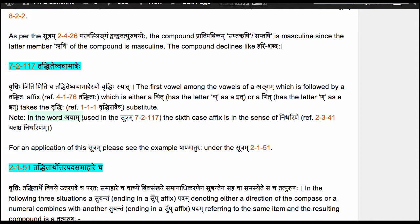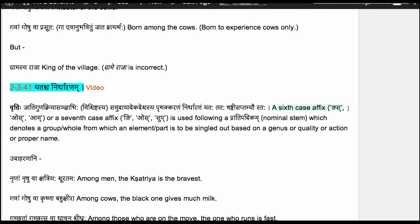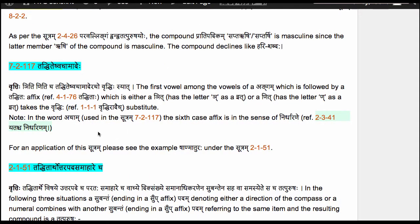The note here says that in the word Achaam used in Sutram 7-2-117, the 6th case affix is in the sense of Nirdharane. Recall Sutram 2-3-41 Yatashca Nirdharanam, which tells us that the 6th case affix or 7th case affix is used following a Pratipadikam which denotes a group or whole from which an element or part is to be singled out based on a genus, quality, action, or proper name. Here we are singling out one vowel from the set of vowels in the Angam — that one vowel is being singled out since it has the quality of being the first among that group of vowels. That is the Nirdharanam, and that is why the 6th case affix in Achaam is described by Sutram 2-3-41.